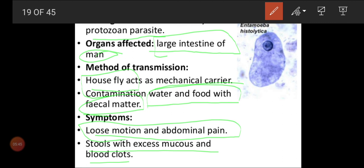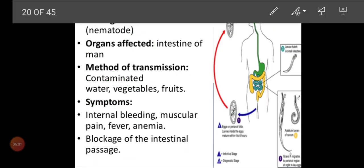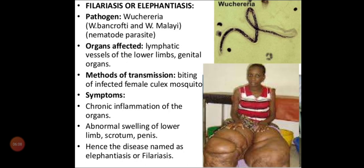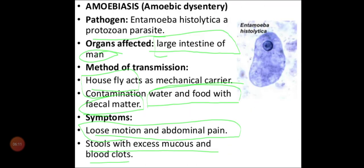That is why personal health and hygiene is very important. To prevent, we should boil the water before drinking. We should also maintain a good sanitation and hygiene program. By this way only we can control the spreading of Entamoeba histolytica.